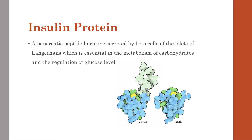Insulin protein is a pancreatic peptide hormone secreted by beta cells of the islets of Langerhans in your pancreas, which is essential in the metabolism of carbohydrates and the regulation of glucose level. Essentially, insulin's function keeps your blood sugar level from getting too high or too low. Insulin allows the cells to absorb glucose present in the blood. The glucose serves as energy to these cells, or can be converted into fat and energy if it's not needed. Insulin also affects other metabolic processes, such as the breakdown of fat and protein.